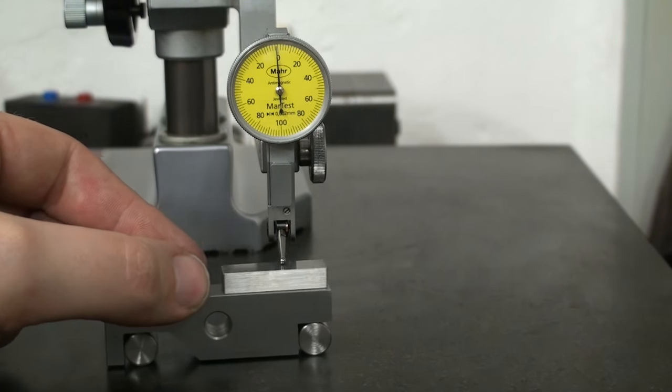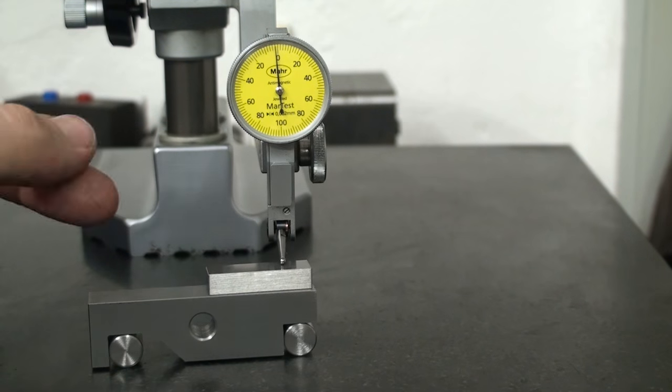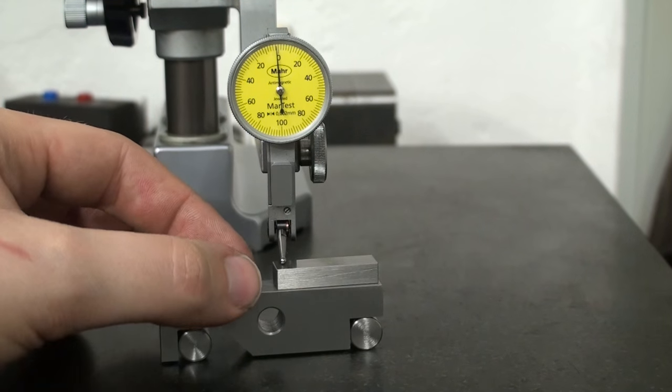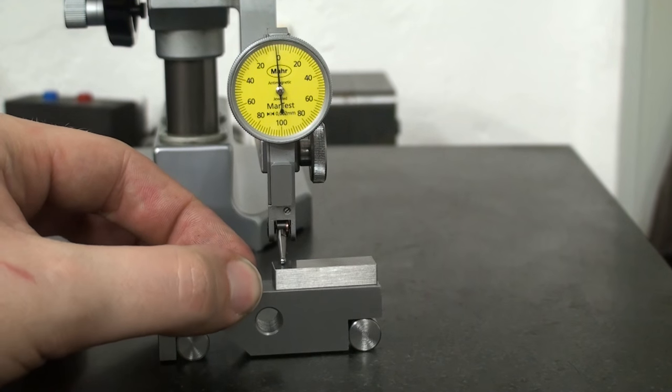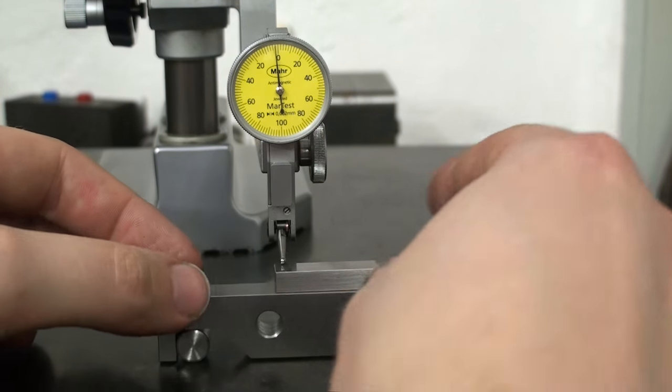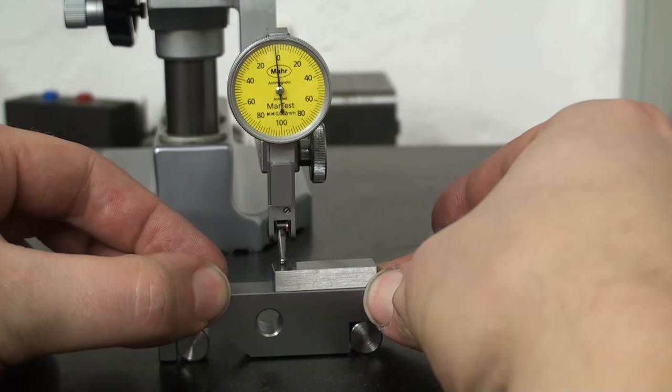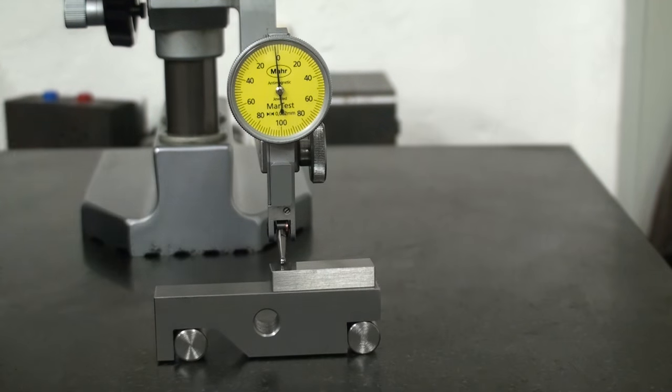And yeah, that's more like it. Yeah, two thousandths of a millimeter left to right, that's pretty good. So I'm just checking if it's tipping on the surface plate, but it's pretty stable. Yeah, quite happy. Two thousandths of a millimeter without a surface grinder.